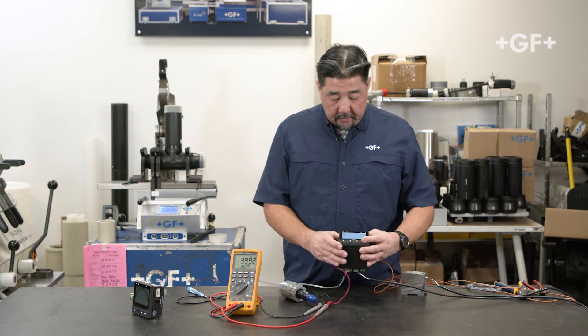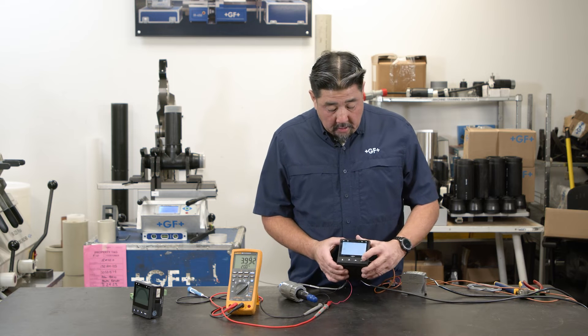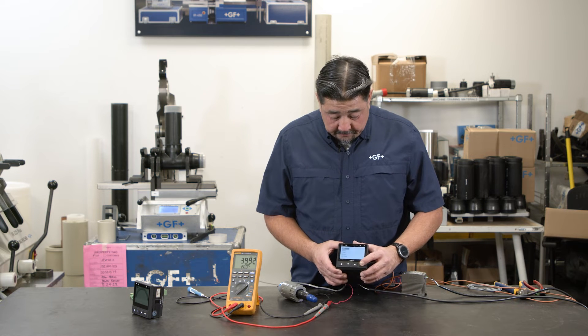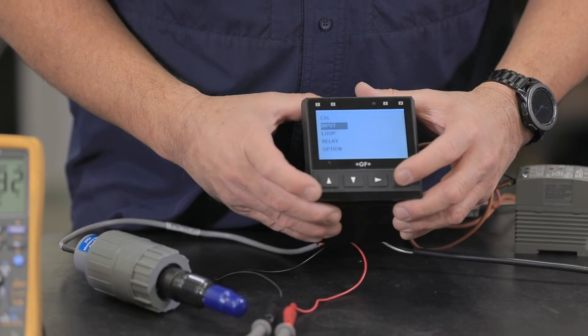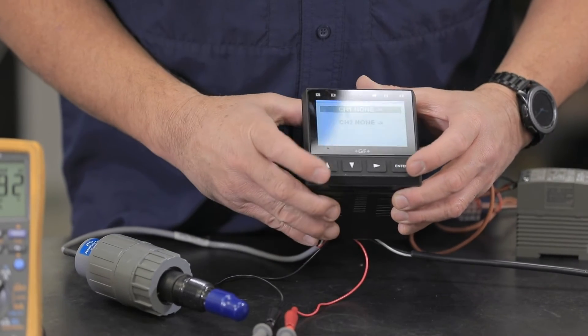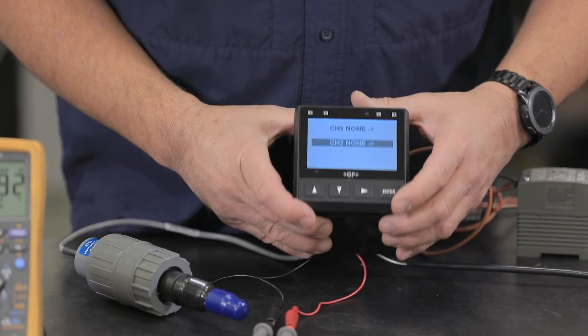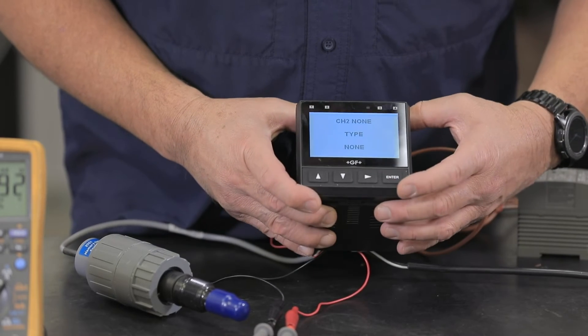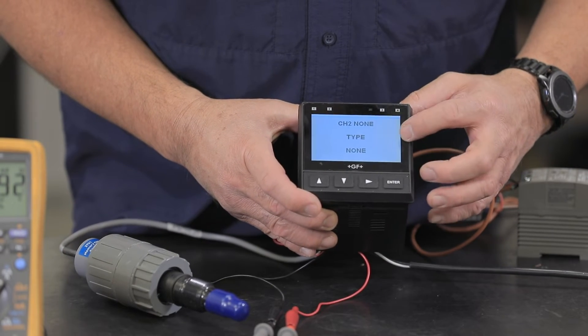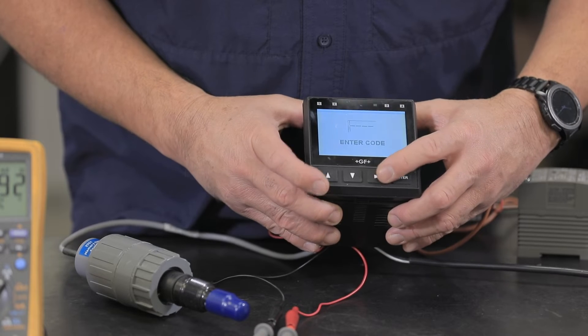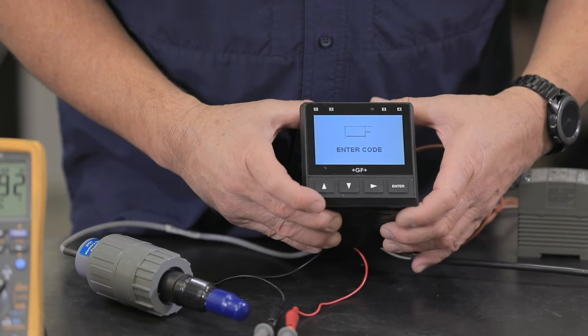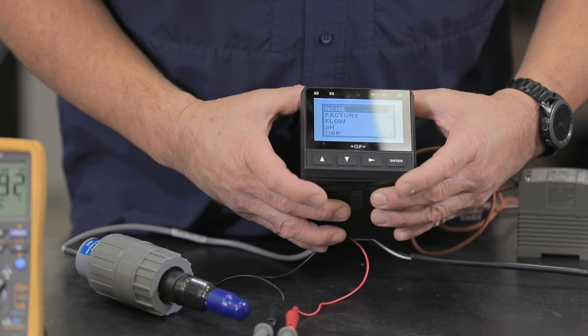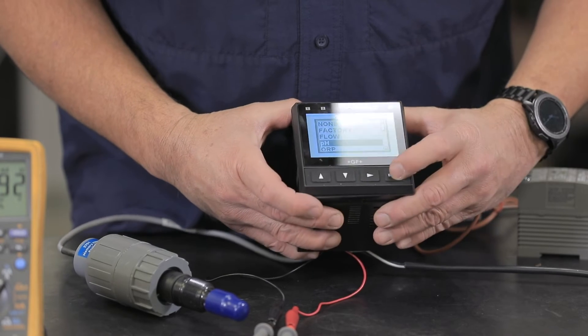So let's go ahead and configure the 9950 to accept pH. Press and hold the enter button, arrow down to input and press enter. I need to do channel two, so I'll hit channel two and the right arrow button. Channel two type none, so we're going to hit the right arrow. Enter the code which is up, up, up, down, and we'll choose pH. Enter.